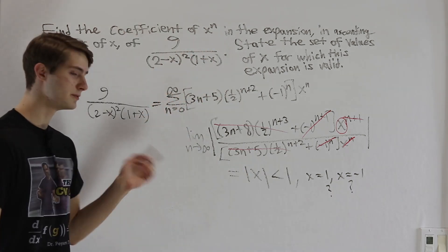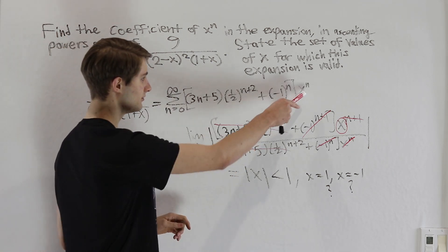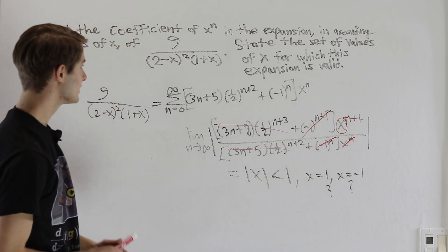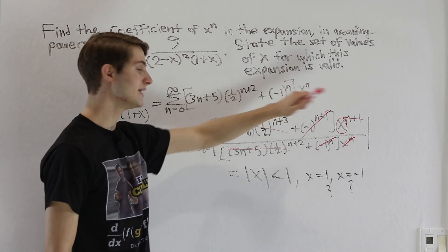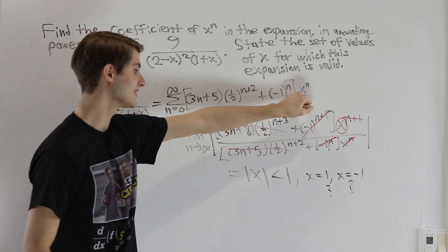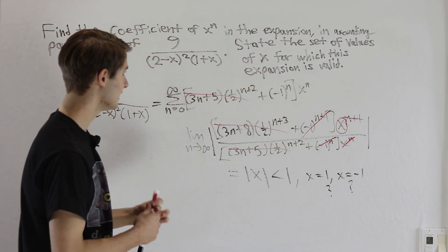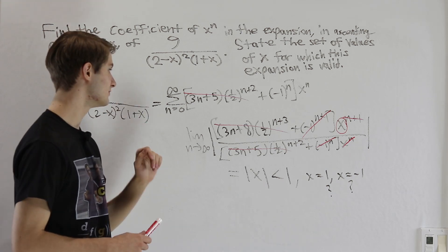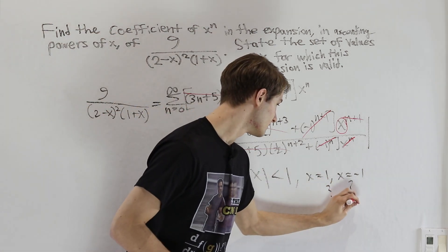We know the series converges when |x| < 1 and diverges when |x| > 1, so we just need to check the endpoints x equals 1 and x equals negative 1. For x equals negative 1: the terms involving (one-half) to the n plus 2 go to zero absolutely, so those converge. But (negative 1) to the n times (negative 1) to the n equals 1, and the sum from n equals 0 to infinity of 1 clearly diverges. So x equals negative 1 diverges.